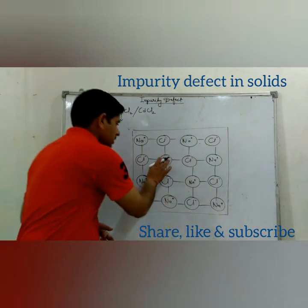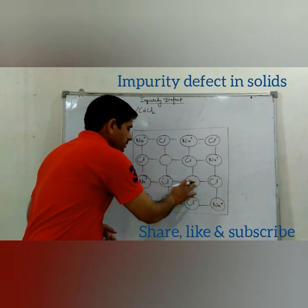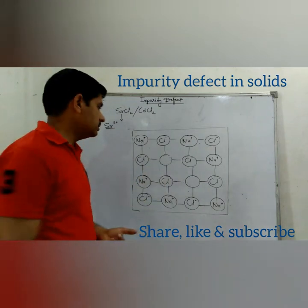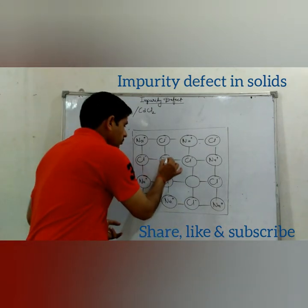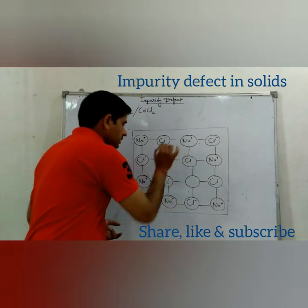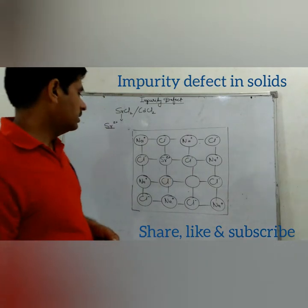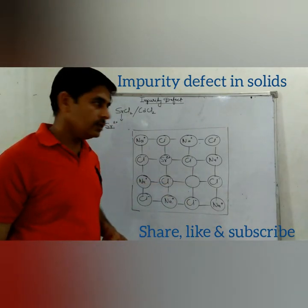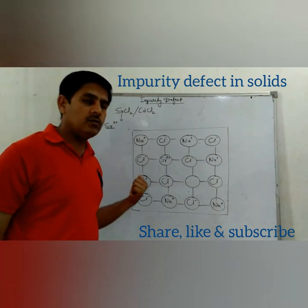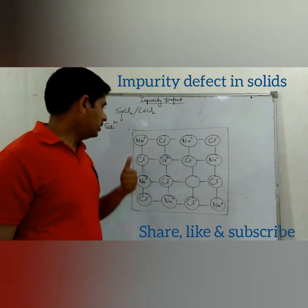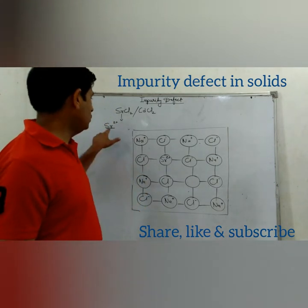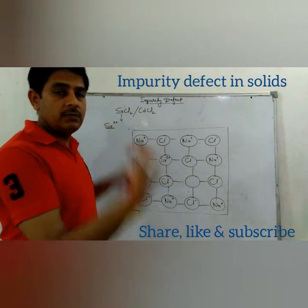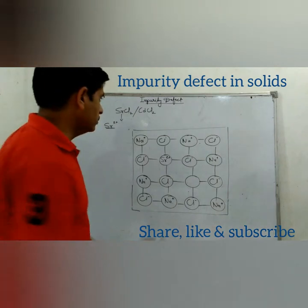One Sr²⁺ will displace 2 Na⁺ ions, creating 2 vacancies. In one of the vacancies, Sr²⁺ will take its place, and the other vacancy will remain empty. So we can conclude that the number of Sr²⁺ ions present in the crystal equals the number of vacancies created.